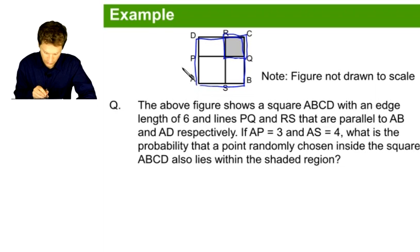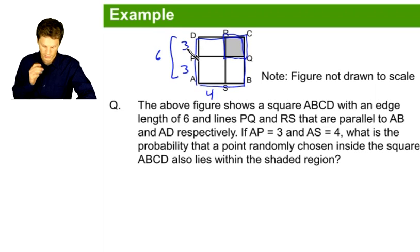If AP equals 3, so this is 3, and AS equals 4, let's not forget that this is a square, the total side length of which would be 6. Therefore, since part of this side of 6 is 3, that means this must be 3 as well. And this remaining side over here, this small segment must be 2.